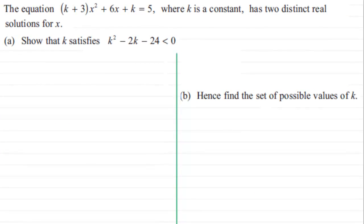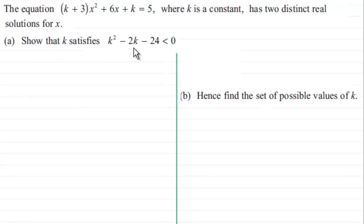Hi, this is a nice question on roots of a quadratic equation and also solving quadratic inequalities. What we've got here is that we have an equation: k plus 3, all multiplied by x squared, plus 6x plus k equals 5, where k is a constant. We're told that it has two distinct real solutions for x, and we've got to show that k satisfies the inequality k squared minus 2k minus 24 is less than 0. In part b, we've then got to find the set of possible values of k.